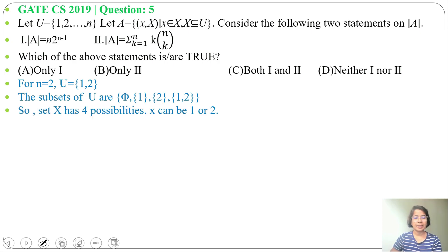For uppercase X, there are four possibilities. For small x, there are two possibilities. It can be 1 or 2.